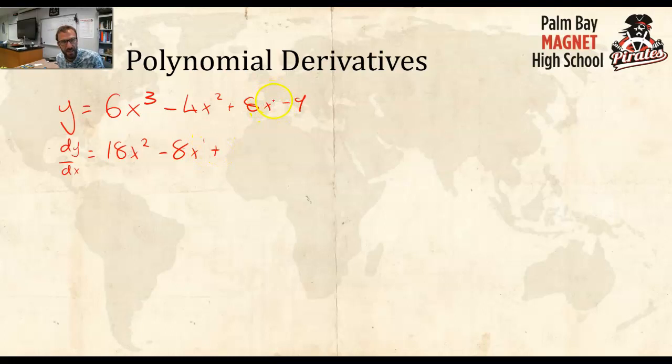Plus 8x, so the 1 goes out front. 1 times 8 is 8. 1 reduces to 0. Anything to the power of 0 is 1, so this is 8. And then the constant just disappears, and we are done. So,